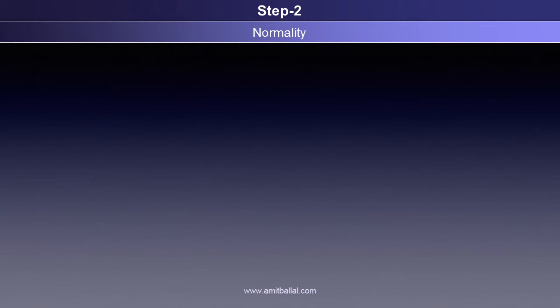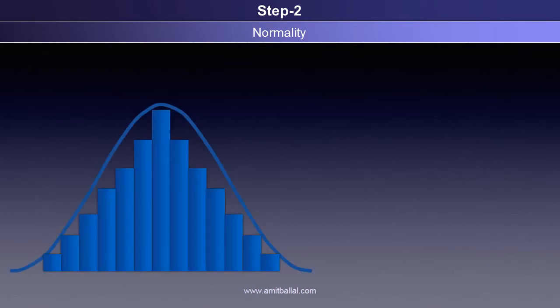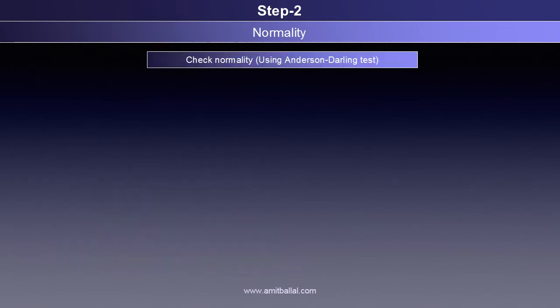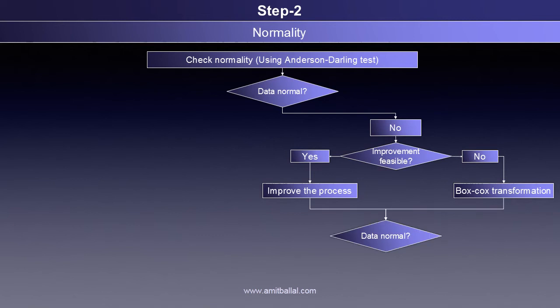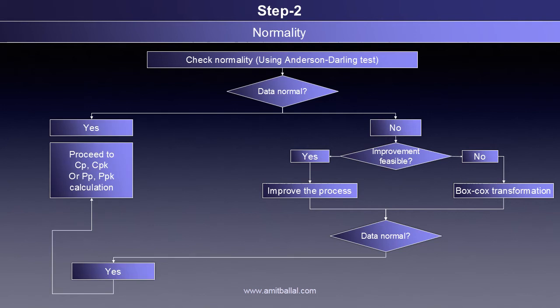Normality: just because the process is stable, it doesn't mean that the process is normal. By normal, it means the process is following a normal distribution. In order to check whether the process is normal, an Anderson-Darling or similar normality test can be performed. If the data is not normal, efforts should be taken to make the process normal to get desired results. And if not feasible, data transformation can be done using Box-Cox or a similar transformation. Such a transformation converts the original data to give modified data which can be near-normal or normal. This modified data again needs to be checked for normality, since it is not always possible to get normal data even after using Box-Cox or similar transformation. After we ensure the data is normal, we can move to the next step: process capability or performance calculations.